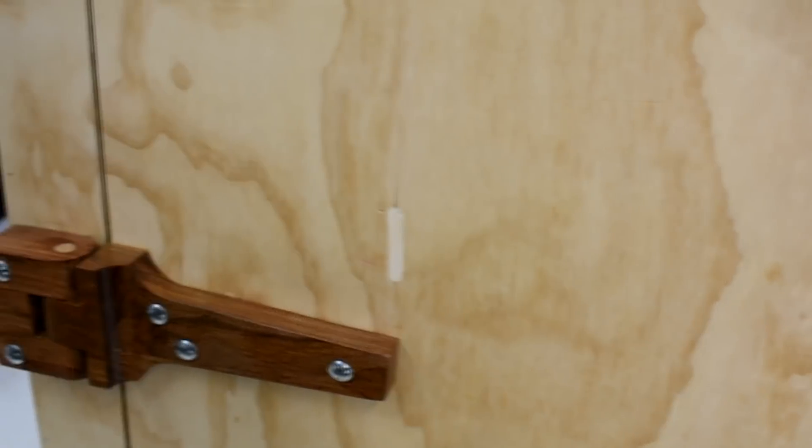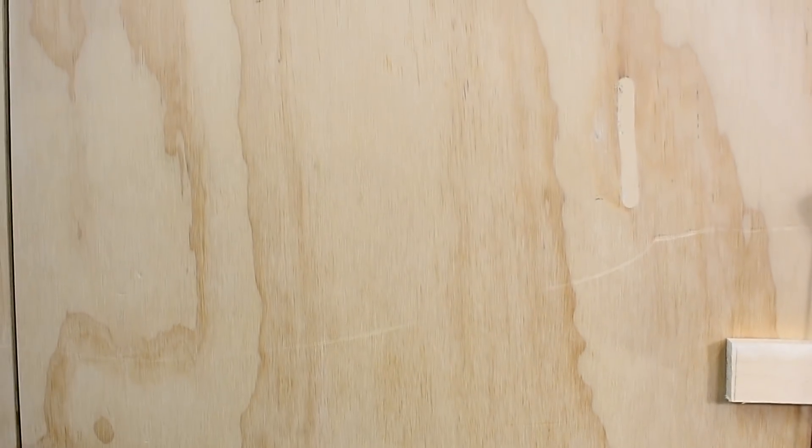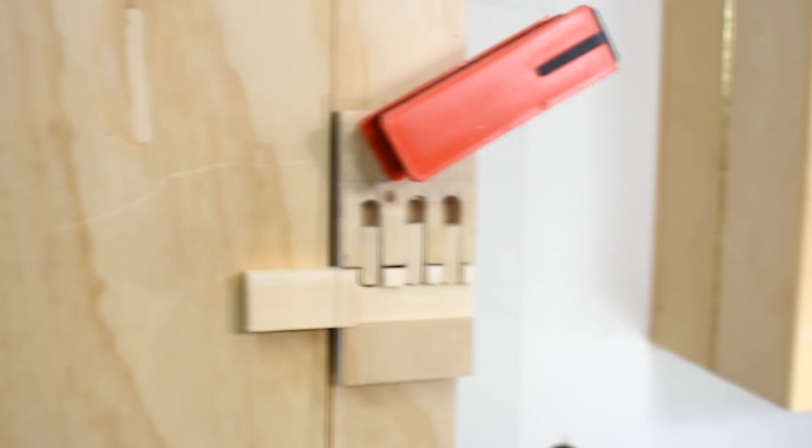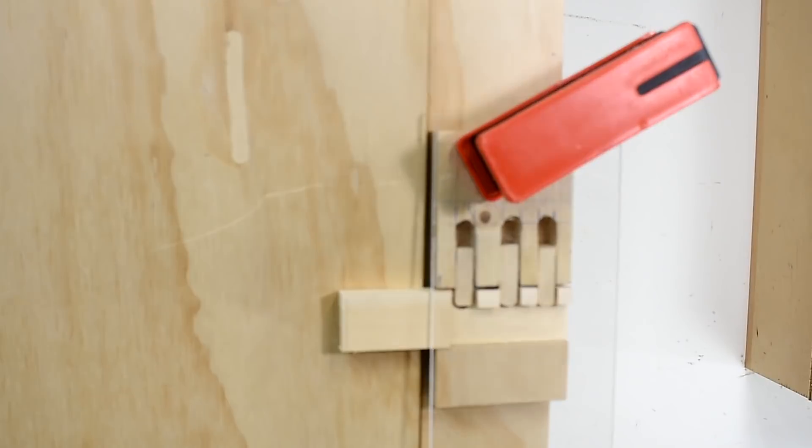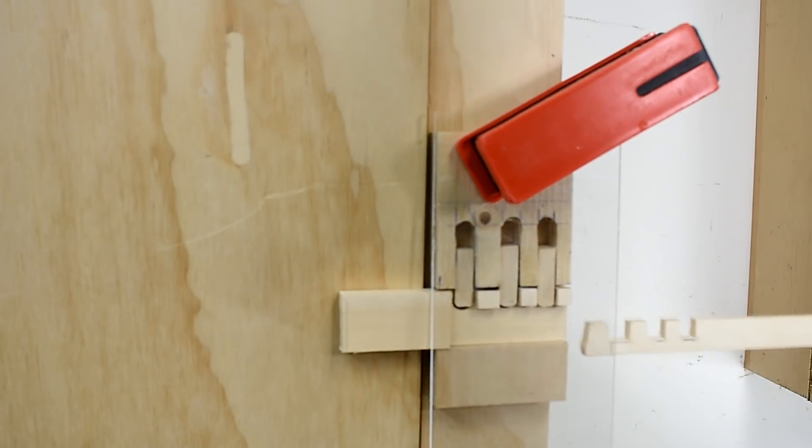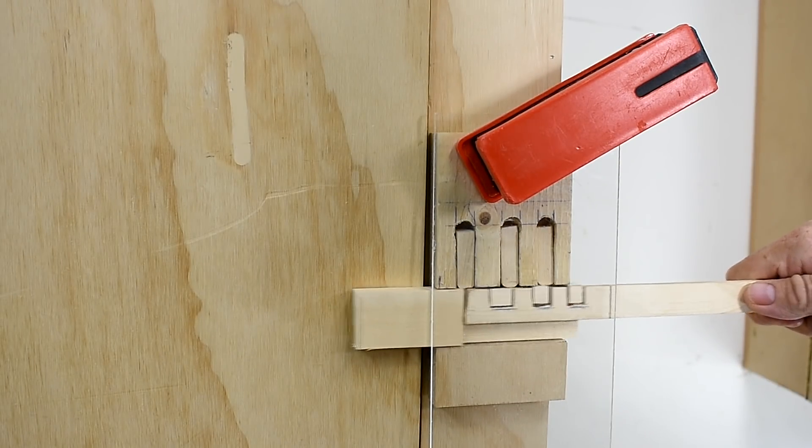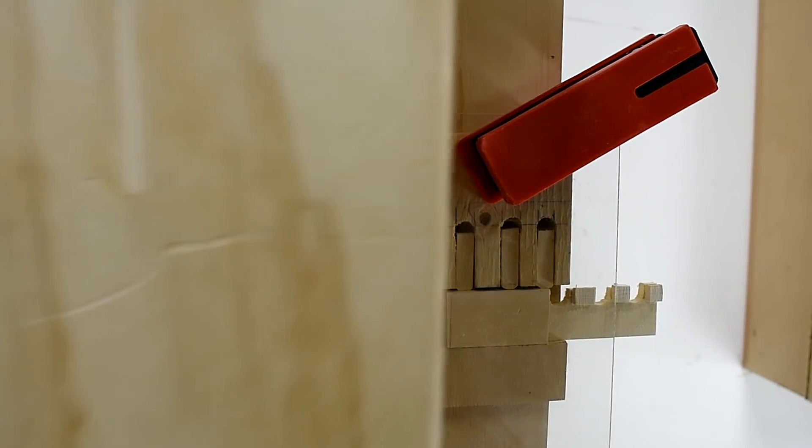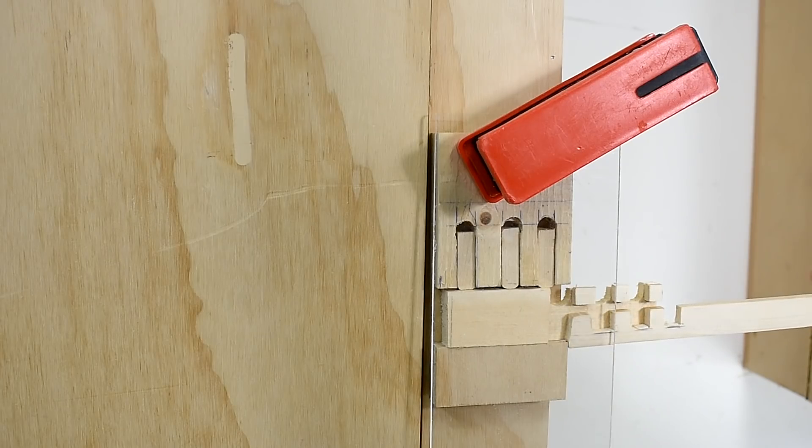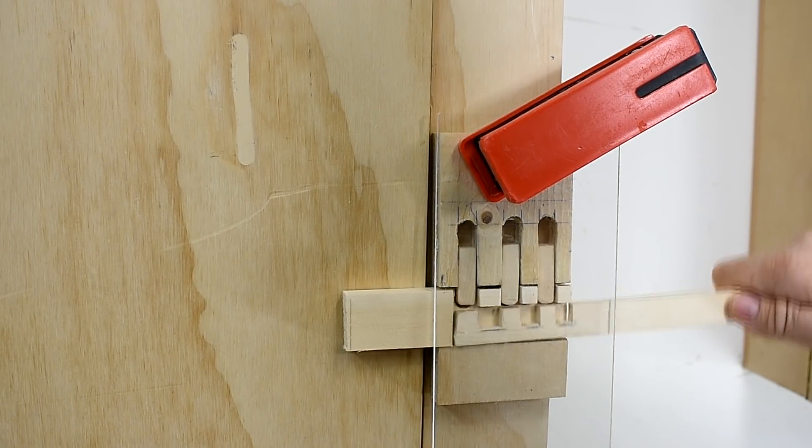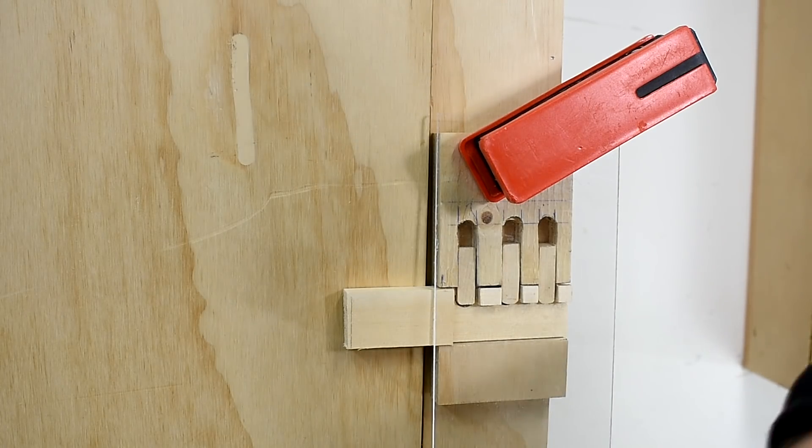In my last video I showed you how I made these wooden hinges, and I told you I would build a wooden lock for my cabinet. This is what I've come up with—it's a prototype just to see if it would work. It does work quite well. Here's the key, and they're locked.